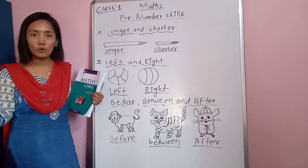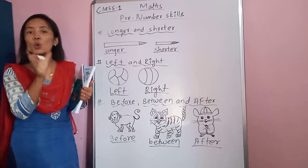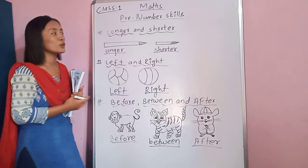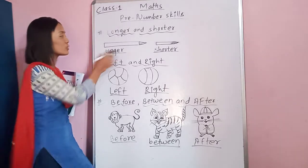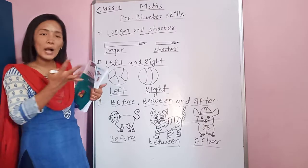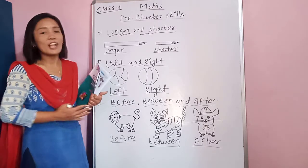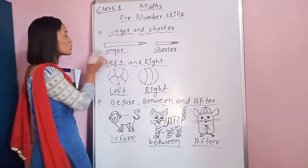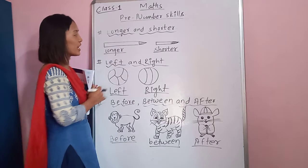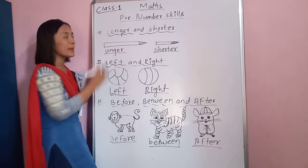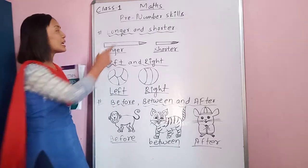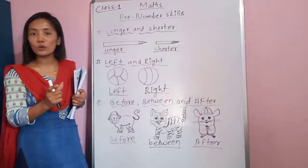Longer means 'lamo' and shorter means 'choto' — lamo, choto. I have made a figure here, a drawing, by which you will become more clear about what longer and shorter mean. Look here — I have made two pencils, in which one pencil is longer and the other pencil is shorter.